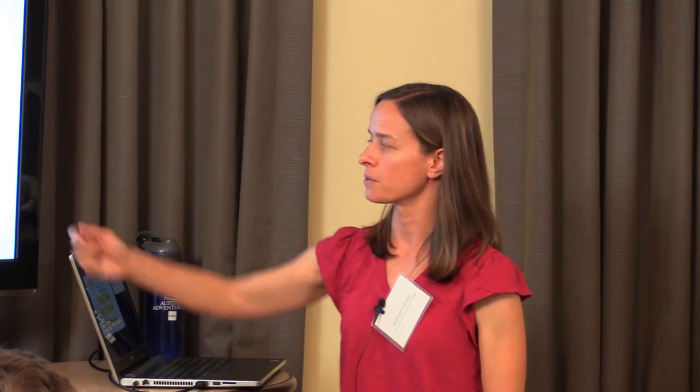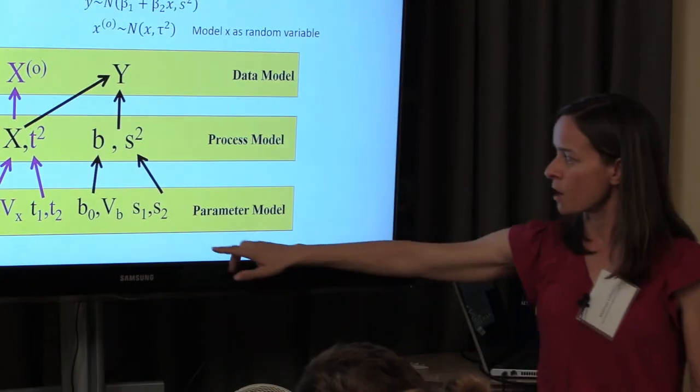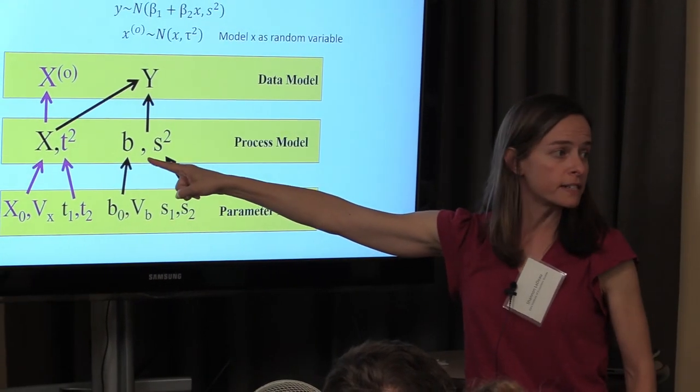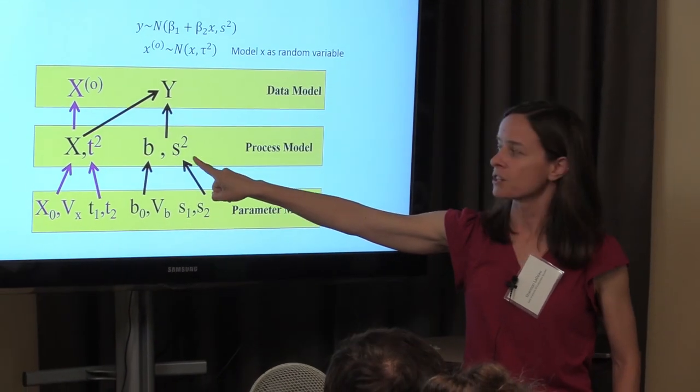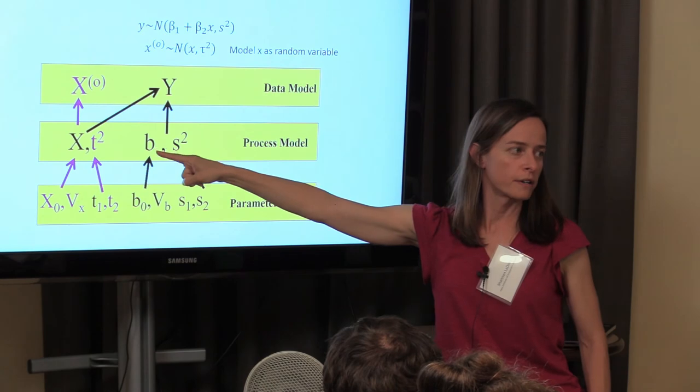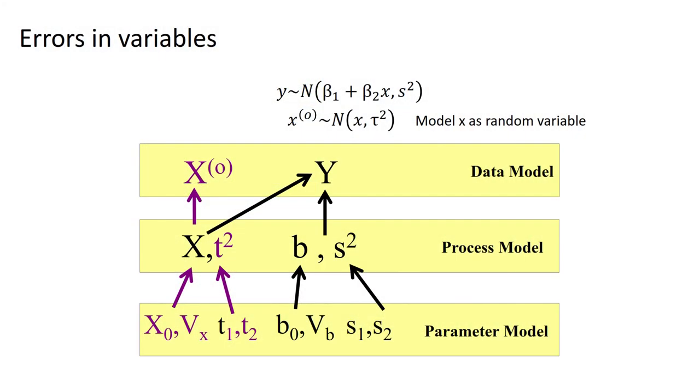In this case, what we've done is we've got the same kind of linear model we've been working with, where our parameters describe the variance around a slope, for instance, an intercept, and the observation error. But also, we've got a model for the predictor variable X that's described by its own set of parameters and also informs Y.